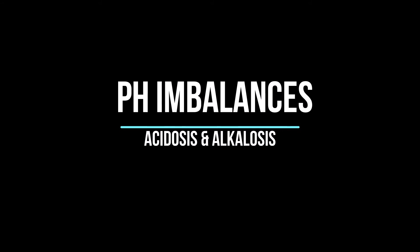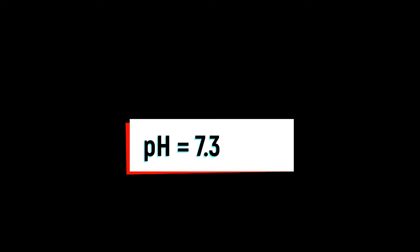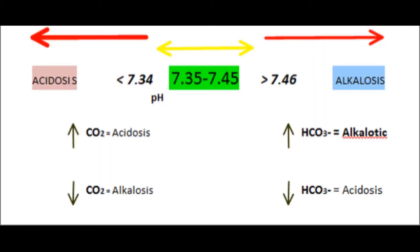Hey guys, it's Layla. Today we'll speak about pH imbalances: acidosis and alkalosis. The normal pH in our blood is 7.35 to 7.45. If the pH decreases below this level it's going to be acidosis, and if it goes above this level it's going to be alkalosis.